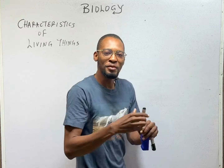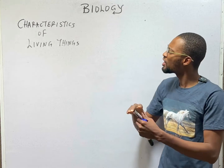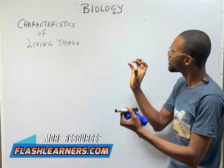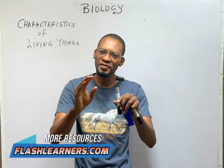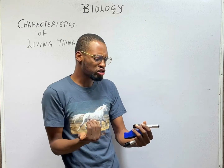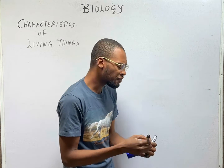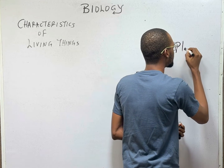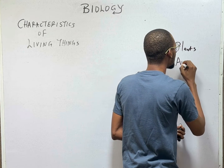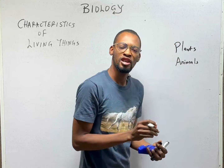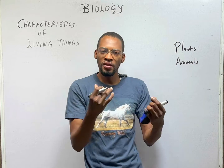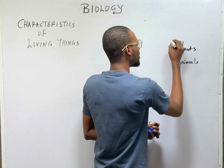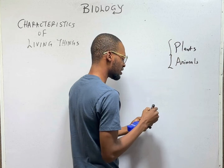In the previous class, we introduced biology and we said that biology is the study of living things. I also established that living things can be divided into plants and animals. So if you were to group the living things we have in this world into two, you are definitely going to say that they are plants and animals.